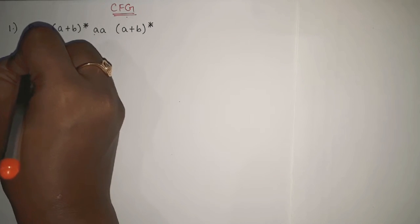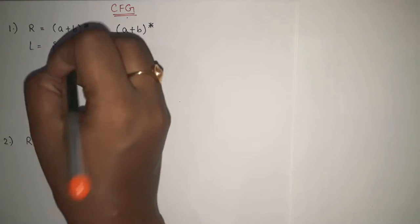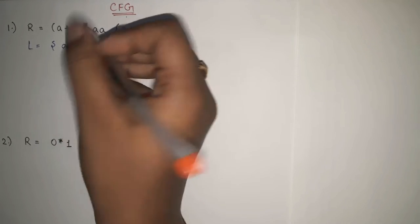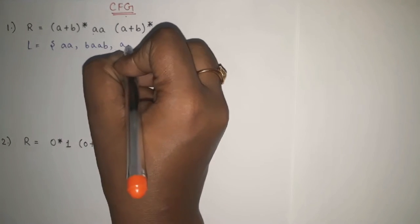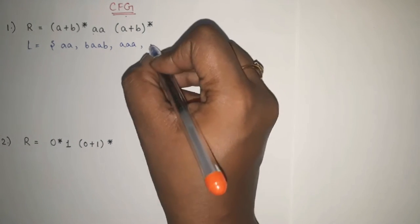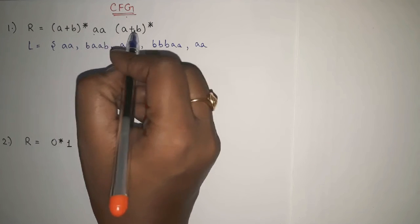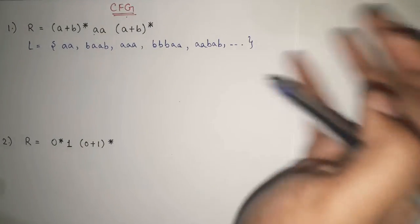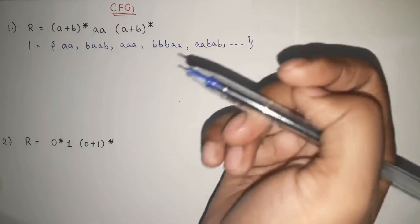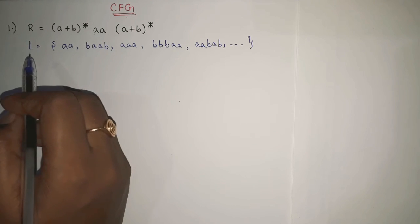Which strings can be generated from this? If I take zero occurrences of both (a+b)* parts, I get only 'aa'. Then I can have strings like 'baab', 'aaabaa', 'bbaa', and so on — any number of combinations. The only compulsory element is 'aa' in the middle. These are the set of strings that can be generated from this regular expression. Now our task is to generate the context-free grammar for this.